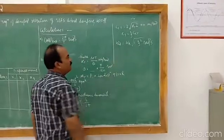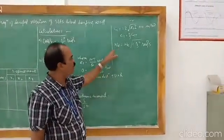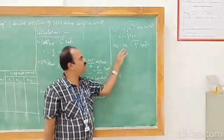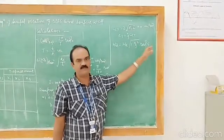Natural frequency of damped vibration we can calculate by this equation. Omega d is the natural frequency of damped vibration and that is equal to omega n times square root of 1 minus zeta square.